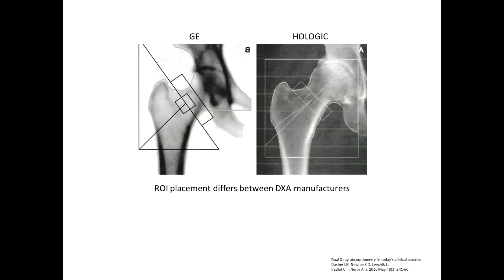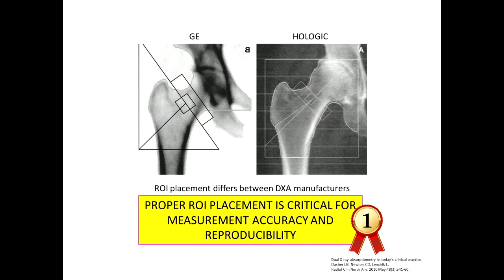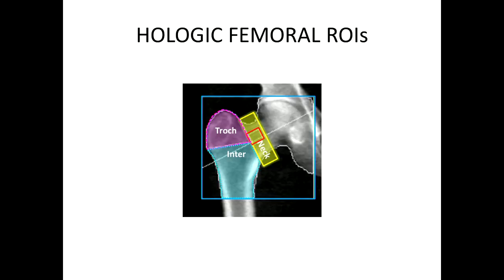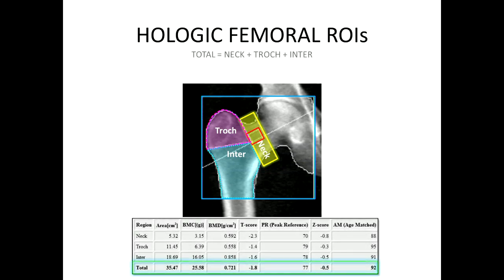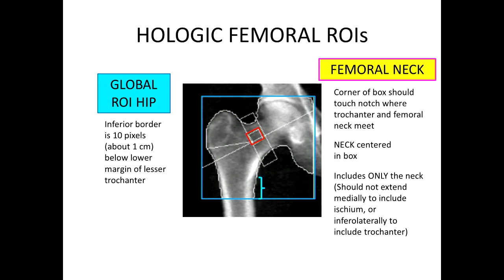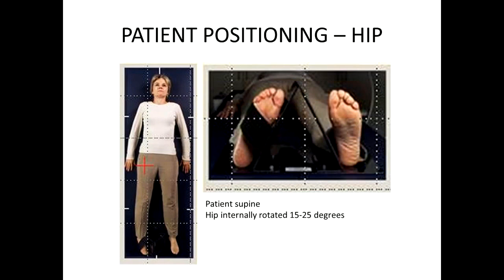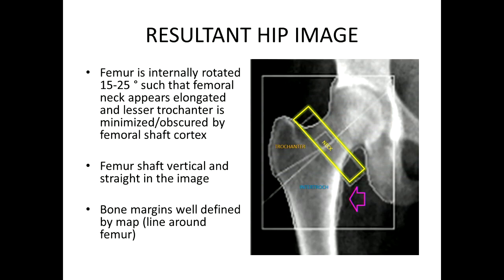While ROI placement may differ between DEXA manufacturers, proper and consistent ROI placement is critical for measurement accuracy and reproducibility. For the Hologic-based system, femoral ROI placement includes the femoral neck, trochanter, and intertrochanteric measurements to give the total. The inferior edge of the global ROI box should lie one centimeter below the lesser trochanter. The femoral neck box corner should touch the junction between the trochanter and upper outer femoral neck, and must only contain the femoral neck centered in this box. The patient must also be positioned with the hip internally rotated 15 to 25 degrees such that the lesser trochanter is barely seen, the femoral shaft is vertical and straight, and the bone margin is well defined by the bone map.